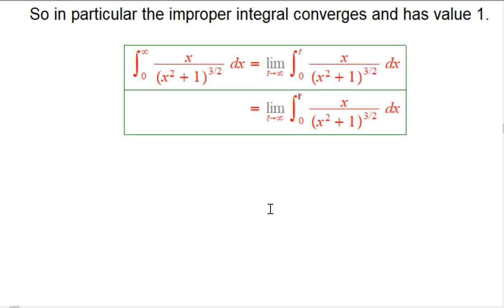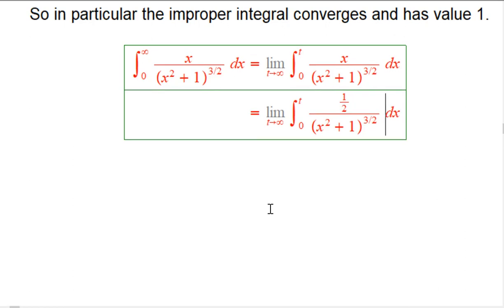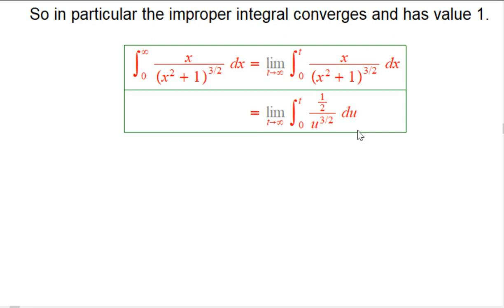We're going to do that same u sub. This is still 1 half du. This is still u to the 3 halves. And then what's the only other part of the u sub is that when x equals 0, then u, well, that's easy. u is 1 plus x squared. That's 1. And when x equals t, that happens to be this parameter, you can still change it. You can still write what u is. u equals 1 plus t squared. That's totally legal.